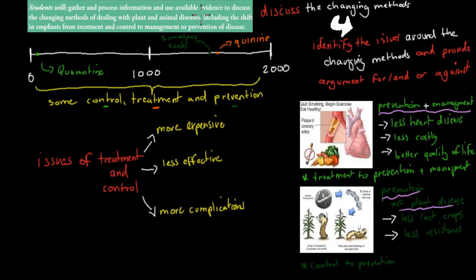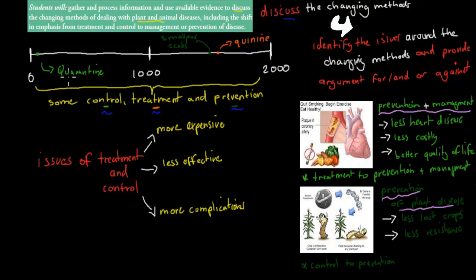The last dot point asks you to discuss the changing methods of dealing with plant and animal diseases, including a shift in emphasis from treatment and control to management or prevention. We had a limited understanding of disease in the past — control means stopping the spread (e.g., ancient Chinese used quarantine), treatment means making people healthy again (e.g., quinine medication for malaria in the Middle Ages), and prevention means stopping people from becoming sick (e.g., people in the Middle Ages inhaled smallpox scabs containing a weakened virus, acting like a vaccine).